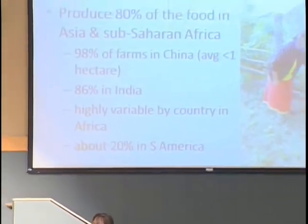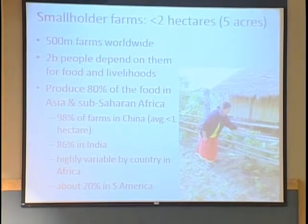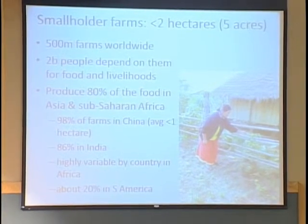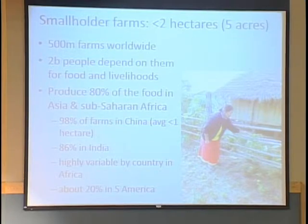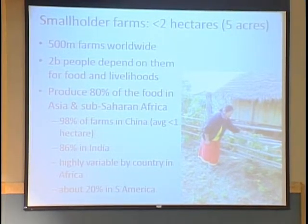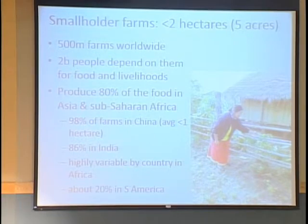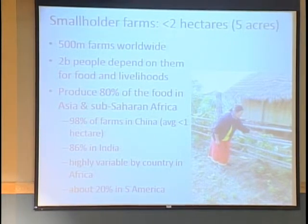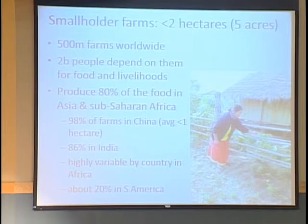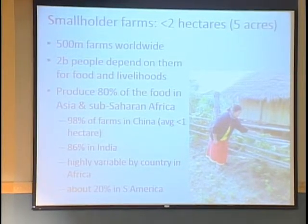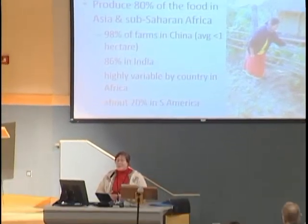We're talking about smallholder farms. The normal definition is those farms that are under two hectares, or about five acres. This is not an insignificant number of people — there are more than 500 million farms worldwide, and more than two billion people in the world depend on these small farms for most of their food and livelihoods. They are particularly important in sub-Saharan Africa and Asia, where about 80% of the food is produced on small farms.